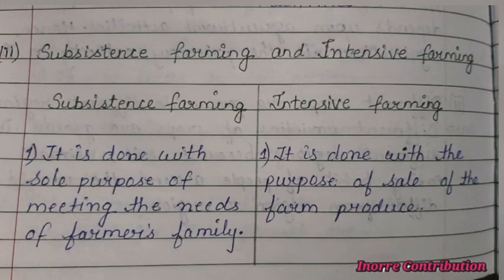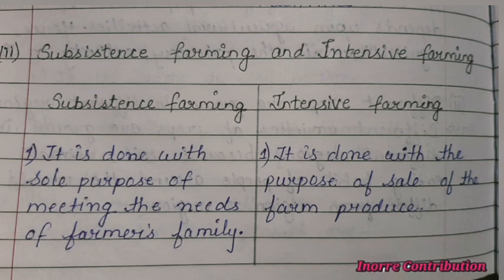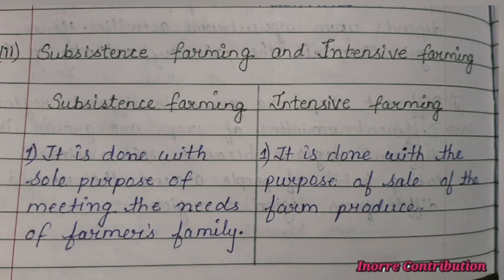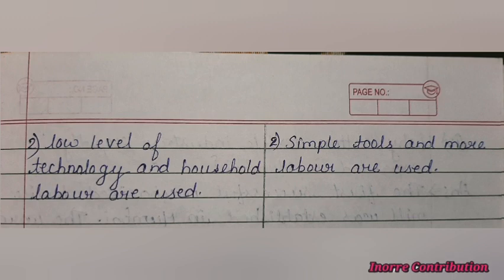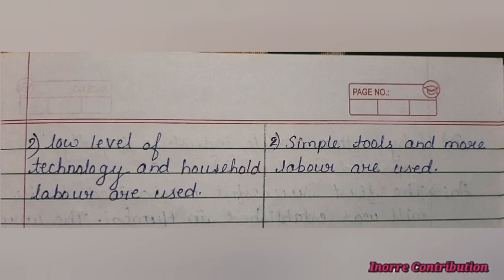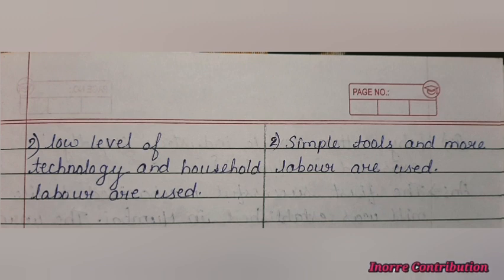Distinguish between subsistence farming and intensive farming. Subsistence farming is done with the sole purpose of meeting the needs of the farmer's family, using low levels of technology and household labor. Intensive farming is done with the purpose of sale of farm produce, using simple tools and more labor.